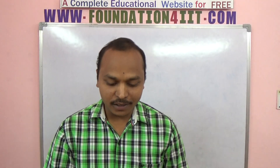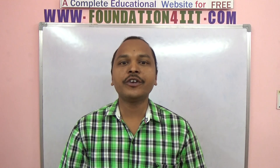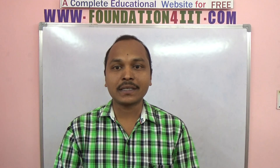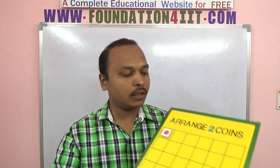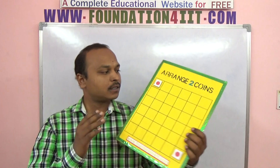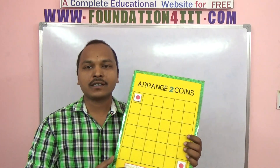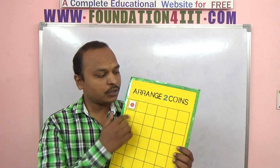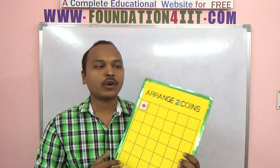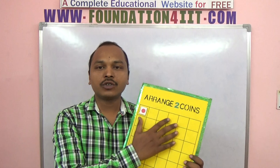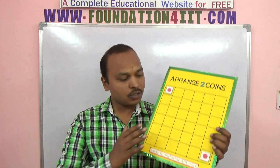Welcome to the educational channel. In this video, I will explain a math puzzle — a logical puzzle. In this box, we have a six by six grid, with six rows and six columns, and we arrange only two coins per line.